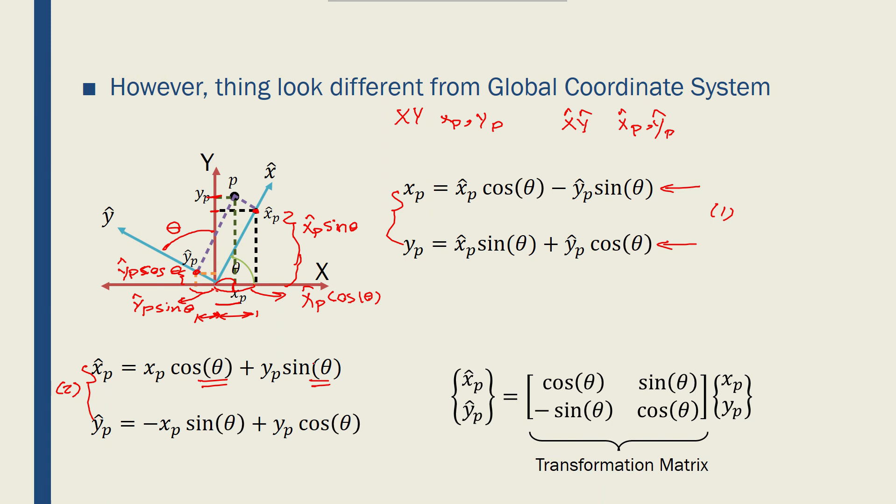I can also write that in a matrix format. So I have a vector of local coordinates of point P and I have a vector of the global coordinates of point P, and then I can write this 2 by 2 transformation matrix. Cos theta, sine theta, because x hat p, if you look at here, is equal to cos theta times xp plus sine theta times yp.